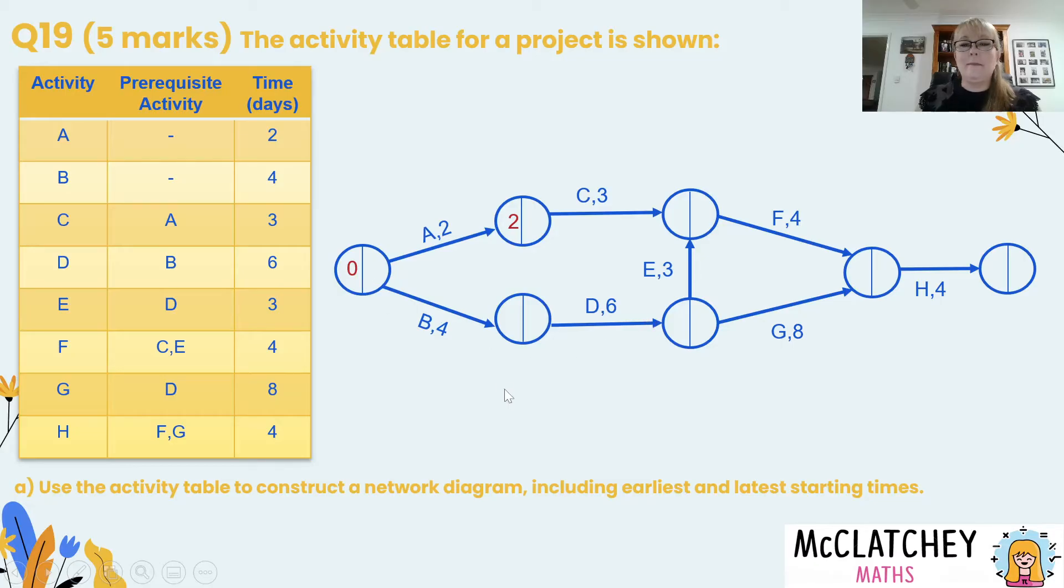Well following along the pathway of A I'm going to add two days and that goes into the left hand side of that vertex. Now I'm not going to keep moving along that pathway because as you can see my next vertex has two pathways coming in so I need to make a decision at that point. I can't make that decision until these vertices are filled out first. So let's go along the bottom pathway now with B we're going to add 4 and then with D we're going to add 6 plus 4 gives us 10.